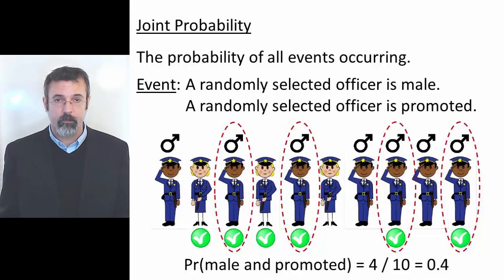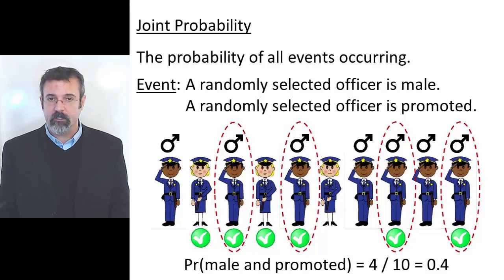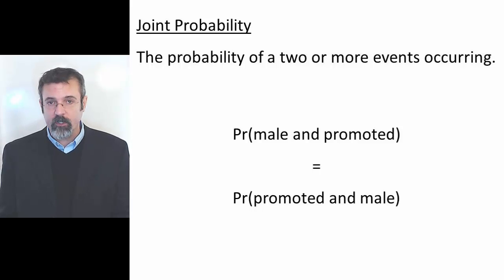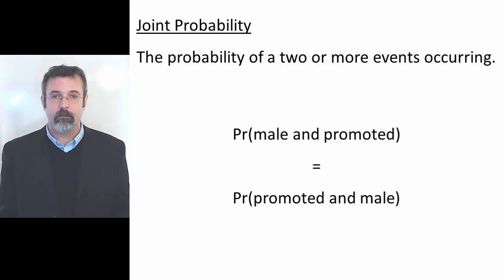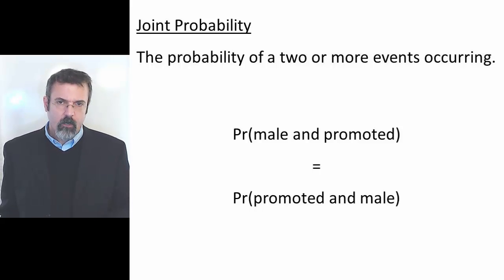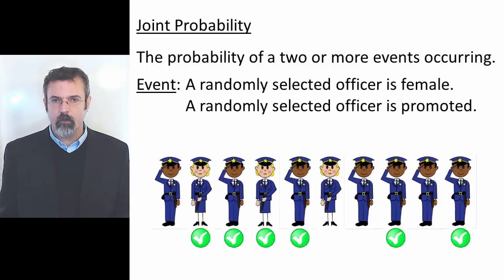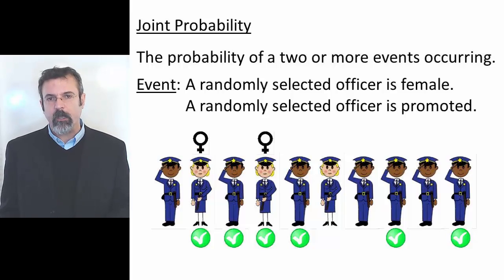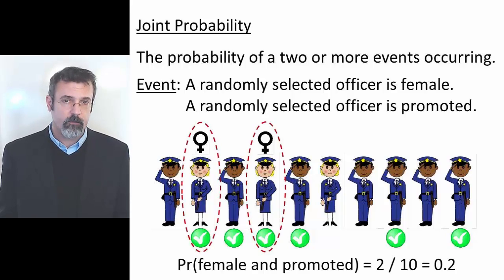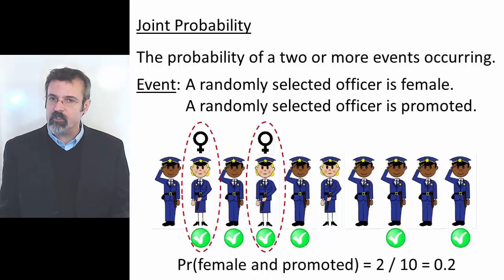The probability of being male and promoted is a joint probability — 4 out of 10, or 40%. Like the disjoint probability, joint probabilities are also reflexive. The probability of being male and promoted is the same as the probability of being promoted and male. Now consider this joint probability: of our 10 officers, 6 have been promoted, but only 2 of those are female.